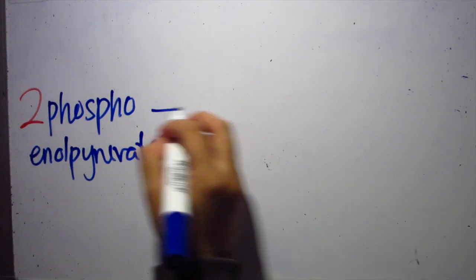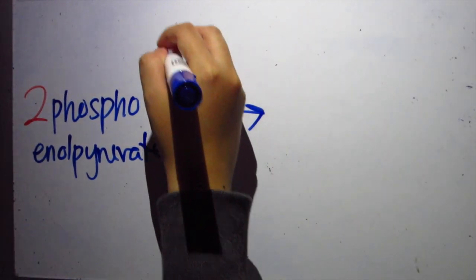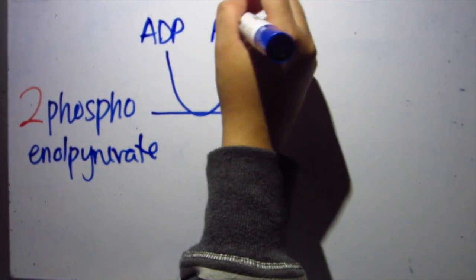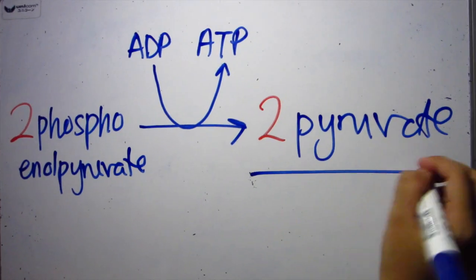Phosphoenol pyruvate. Last step. Phosphoenol pyruvate loses another phosphate group. ADP is used, ATP is produced. Finally we have pyruvate.